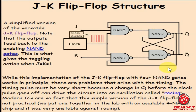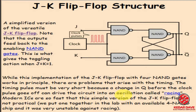In the JK flip-flop circuit diagram, there are four NAND gates working in essentially the same manner as the SR flip-flop, but two of the NAND gates have three inputs each. Whatever you provide to J and K will give you the output Q and Q-bar. There is a timing problem: the timing pulse must be very short, because a change in Q before the clock pulse goes off can drive the circuit into an oscillation called the race around condition.